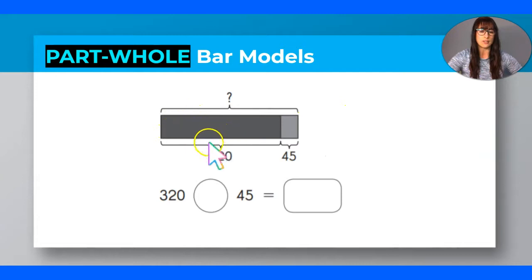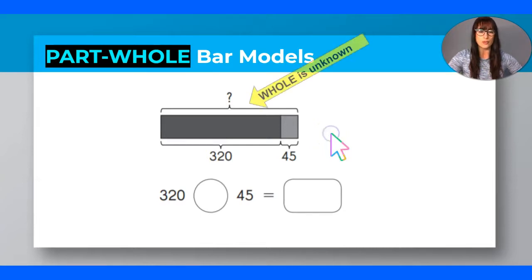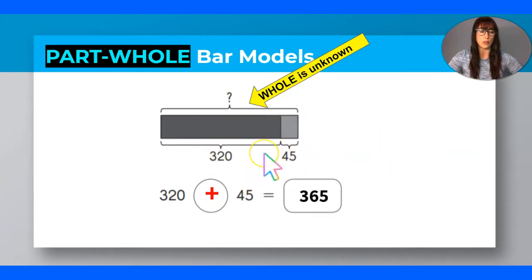In this particular bar model, as you can see, we know the parts but we don't know the whole. So if I have a bar model like this in front of me, and my whole is unknown, I have to do addition — that's correct. You add these two parts to find out what the whole is, and the answer will be bigger than either of the two part numbers.